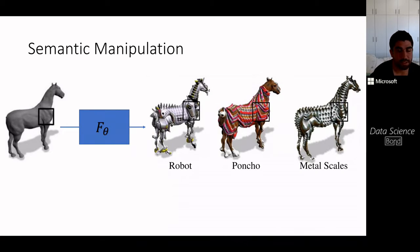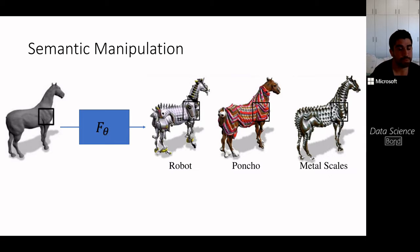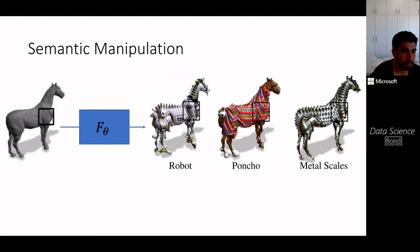Here is another kind of example: we want to stylize a 3D object — for instance, a horse — that can be viewed from multiple directions, and manipulate it using an intuitive text prompt like 'a robot,' 'a poncho,' or 'major scales.'